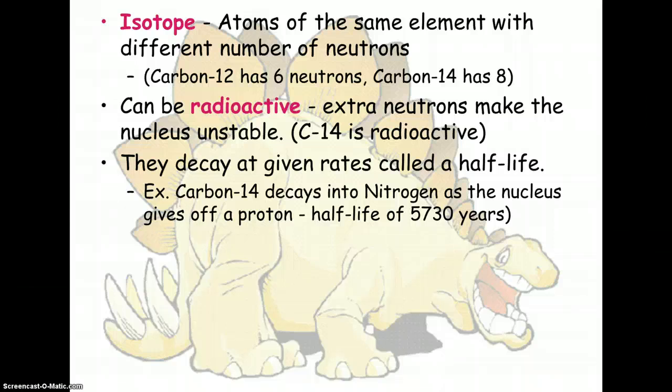So if something was to die today, and we were to dig it up about 6,000 years later, it would contain about half the carbon 14 compared to the amount of nitrogen that it contains, compared to something that was alive today. And so they can use this ratio to determine how old certain fossils are.